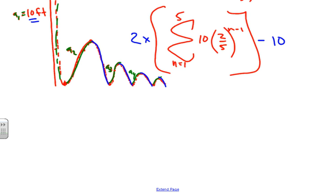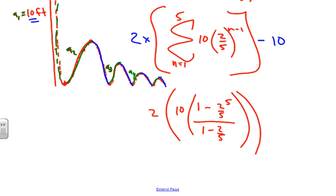Let's find this sum using the geometric sum formula. Take the first term, 10, times (1 - (2/5)^5) divided by (1 - 2/5). Then multiply that value by 2 and subtract 10.